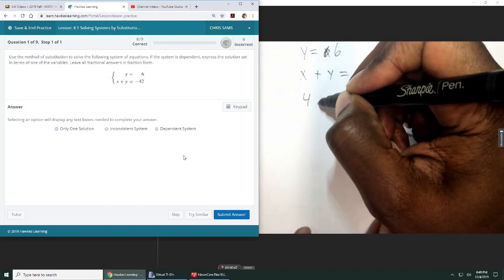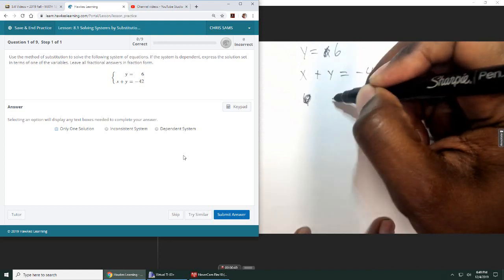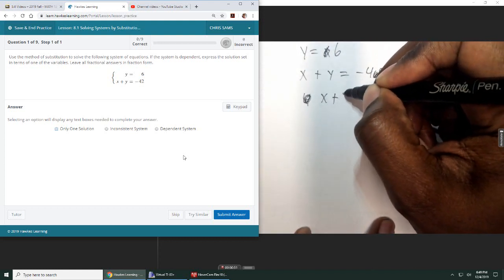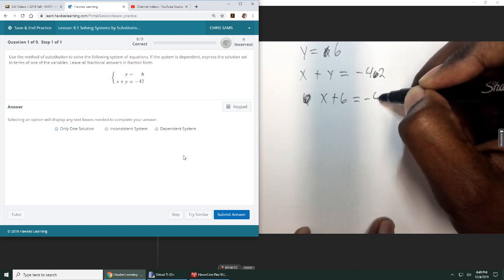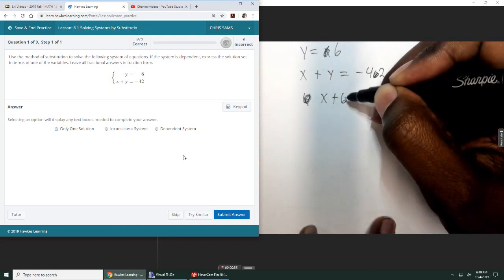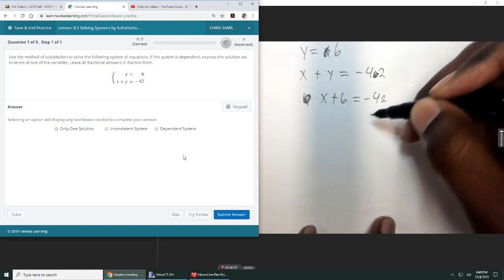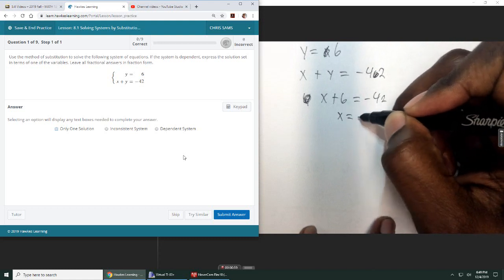So we have x plus 6 equals negative 42, and then we can solve for x by subtracting 6, and we get x equals negative 48.